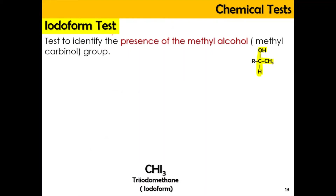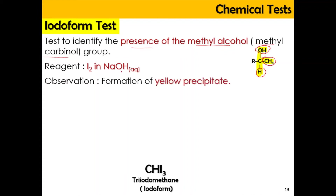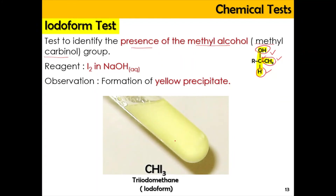Now we're going to look at the iodoform test. The iodoform test is used to identify the presence of the methyl alcohol or methyl carbonyl group. The methyl carbonyl refers to a carbon attached with OH, CH3, and also hydrogen. The reagent needed is iodine in the presence of aqueous sodium hydroxide. If the reaction is positive — where this structure is present — a yellow precipitate is formed, which is triiodomethane, or iodoform, CHI3.